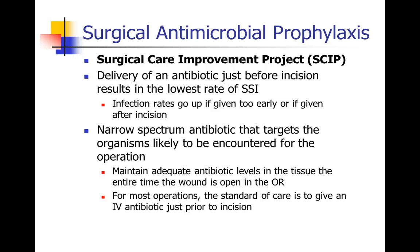Now we continue with our approach to antibiotics in the surgical and perioperative setting. There's something called SCIP — the Surgical Care Improvement Project — which has benchmarks to define quality in the perioperative period, one of which involves antimicrobial prophylaxis. The intention is to administer an antibiotic just before incision to achieve the lowest rate of surgical site infection. Giving the antibiotic too early or after incision increases the risk of infection. We also want to use the best antibiotic — something as narrow as possible, targeting the most likely organisms.